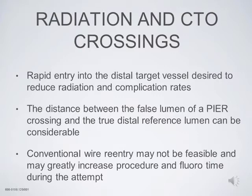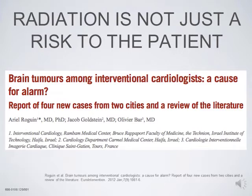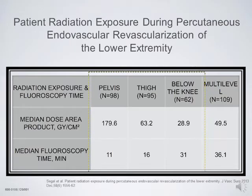Average fluoroscopy times for crossing in the literature have ranged up to 20 minutes. Radiation is a significant problem with multiple health risks to the physician, patient, and others in the room. There have been multiple reports of brain tumors — particularly left-sided, which is the side of greatest radiation exposure for interventionalists. Radiation exposure on peripheral vascular procedures is much more significant than even coronaries, and as we do more below-the-knee work for critical limb ischemia, the mean radiation exposure time is considerably greater.